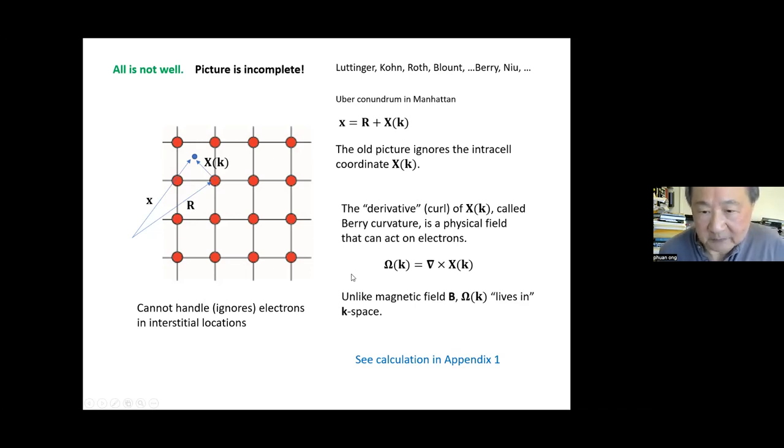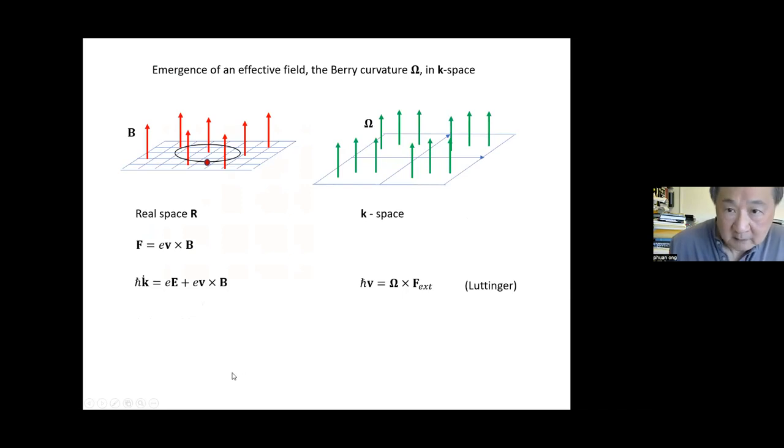From here on, I'm going to talk about the new change in our perspective that topology brought. So this picture is incomplete, and this was known by the very early theorists: Luttinger, Cohn, Roth, Blount. Then there was a 30-year gap. Then it was picked up again by Michael Berry, who really brought topology to physics through what's called the Berry phase, and then picked up by Chen Niu and so on.